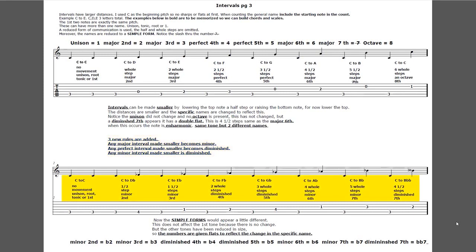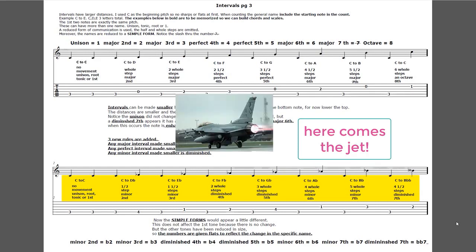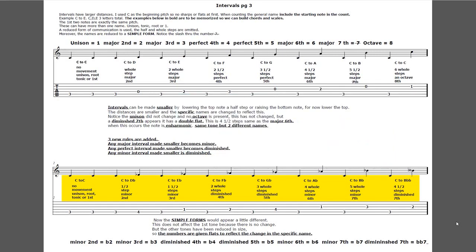Look below - it shows C to C, no movement, just unison, root, or first. The C to D-flat is a half step and it's still two letter names, so it's called a minor second because any major interval becomes minor. C to E-flat, one and a half steps, is a minor third. C to F-flat is two whole steps, a diminished fourth - enharmonic to a major third. C to G-flat, three whole steps, is a diminished fifth. C to A-flat, four whole steps, is a minor sixth. C to B-flat, five whole steps, is a minor seventh. And between that minor third and minor seventh, those are important intervals. At the end we see C to B double-flat - four and a half steps, a diminished seventh.